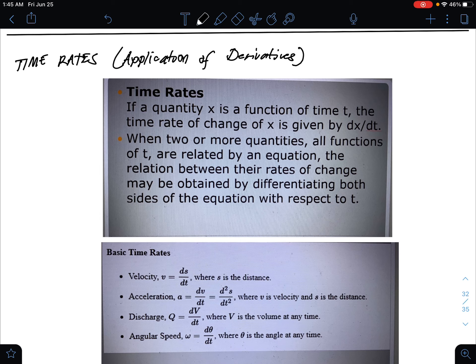If a quantity x is a function of time t, the time rate of change of x is given by dx over dt. For example, you have an equation x with respect to time, so you have to derive it with respect to time, which is dx over dt.